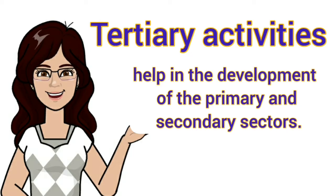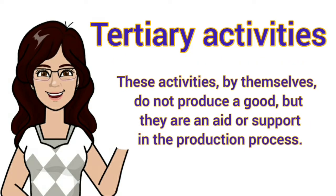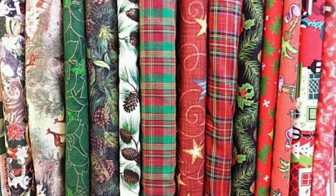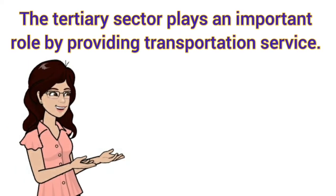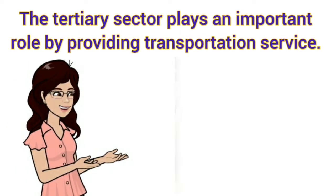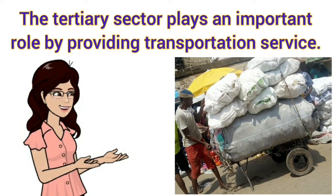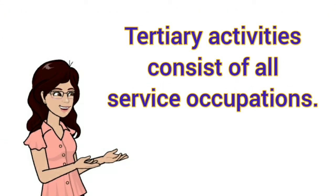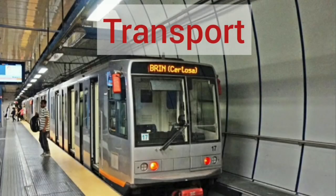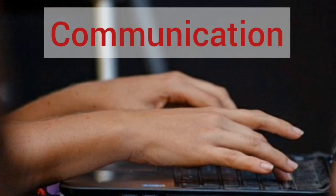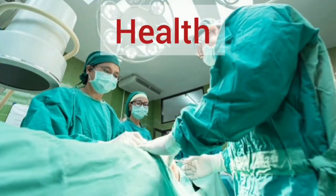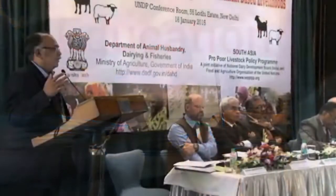Now come to the third one — tertiary activities. Tertiary activities help in the development of the primary and secondary sectors. These activities by themselves do not produce a good, but they are an aid or support in the production process. For example, the clothes that are made in industries need to be transported to the market — here the tertiary sector plays an important role by providing transportation services. Tertiary activities consist of all service occupations such as transport, communication, trade, health, education, and administration.